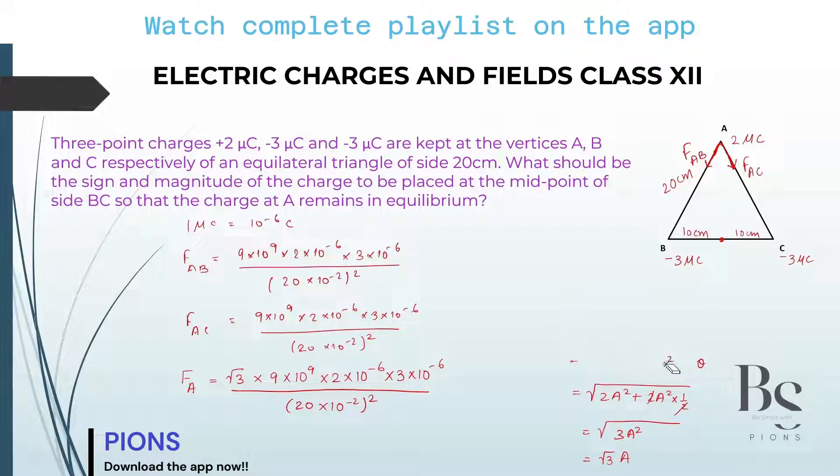So net force acting on A due to both the charges should be equal to root 3 force. One of the force you can put here 9 into 10 to the power 9, 2 into 10 to the power minus 6, 3 into 10 to the power minus 6 whole divided by 20 into 10 to the power. Since both the vectors are equal FAB and FAC and both are inclined at 60 degree, we get this particular outcome. So this is our total force acting on A. If this is the force acting on A, where will this force be acting? This force will be acting this side. From Lami standard, if this is a vector and this is another vector, the resultant is always this. So this is our resultant.